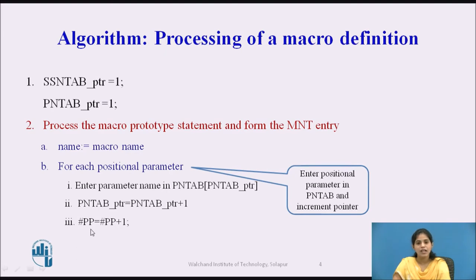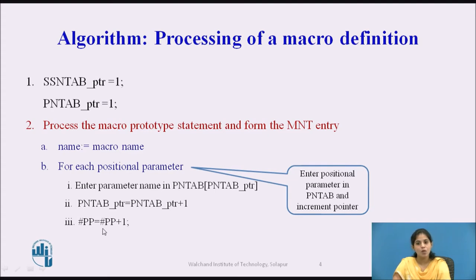In the third step, we write the statement hash PP = hash PP + 1 in the MNT table. We require the number of positional parameters, and that value is stored in the variable hash PP. That is why we specify: hash PP = hash PP + 1.